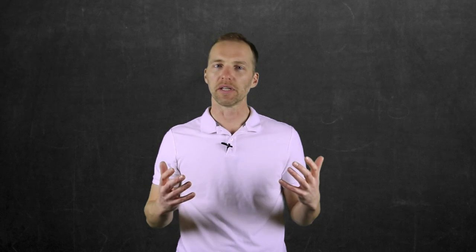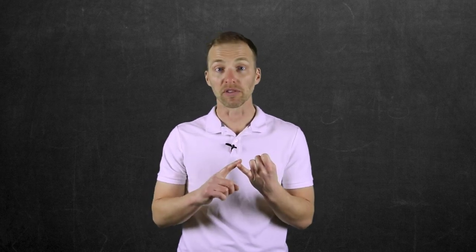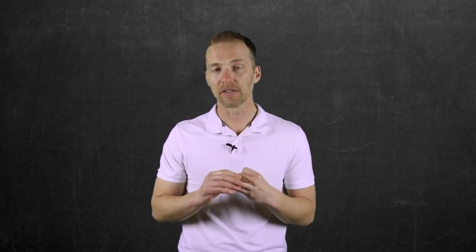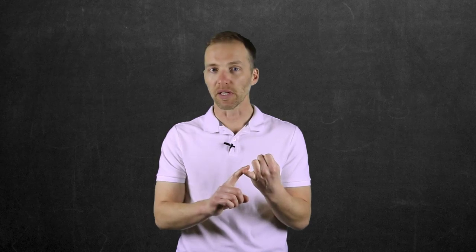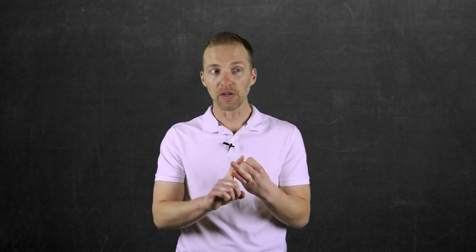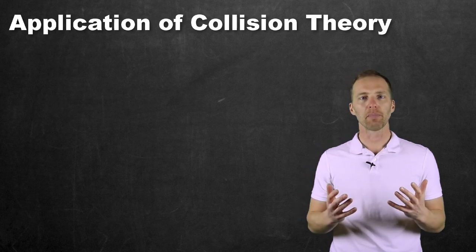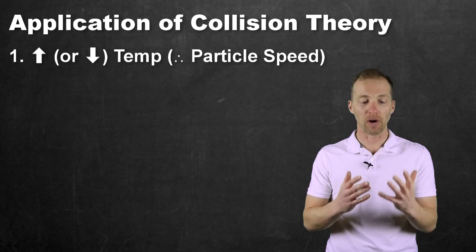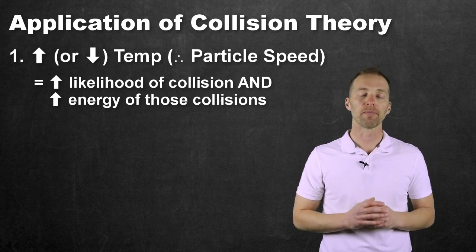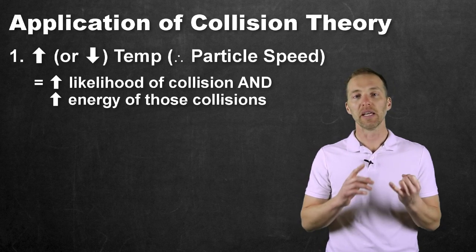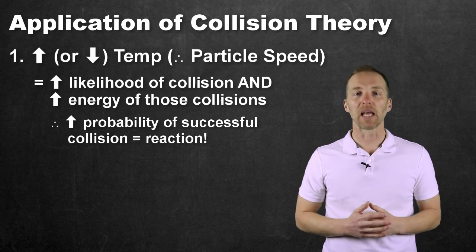Now that we understand the basics of collision theory, how do we use this to our advantage? If a chemical reaction must have particles colliding with sufficient energy to overcome the activation energy barrier, then we can increase the number of collisions and the energy of those collisions to increase the likelihood of success. One way is to speed up the particles by heating them up. Increasing temperature not only gives particles more energy so that collisions carry greater energy, but also makes particles move faster so they collide more often — thus increasing both the number and energy of collisions.